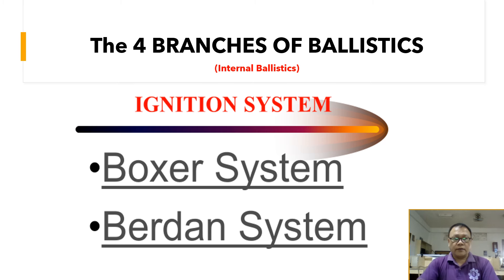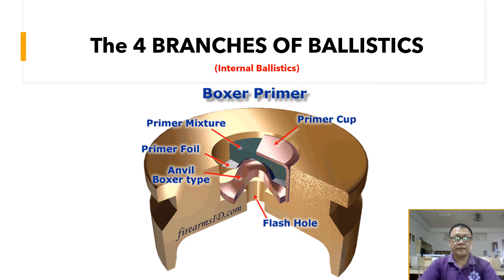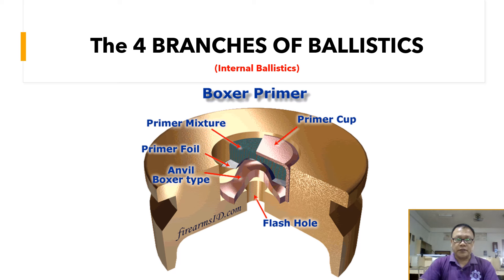This is about the ignition system. The two types of primer are the Boxer system and the Berdan system. The Boxer system, as shown on screen, has the priming mixture, the primer cup that holds the priming mixture, and the flash hole which is the gateway for the ignition of the priming mixture so that it will burn the gunpowder.